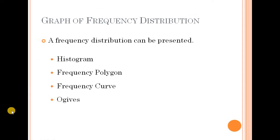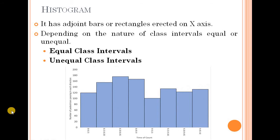Frequency graph — that is frequency distribution graph. Frequency distribution can be presented by graphical method. There are four types of frequency distribution graph: histogram, frequency polygon, frequency curve, and ogives.